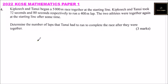This is number 4, 2020, KCSE Mathematics Paper 1. We are told Kipro, Kipko Ech, and Tanui began a 5,000 meters race together at the starting line. Kipko Ech and Tanui took 72 seconds and 80 seconds respectively to run a 400 meter lap. The two athletes were together again at the starting line after some time. Determine the number of laps that Tanui had to run to complete the race after they were together.